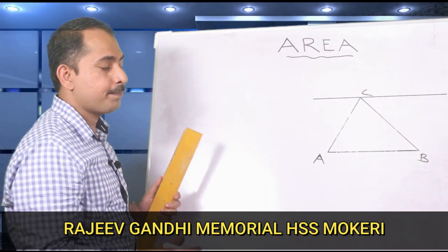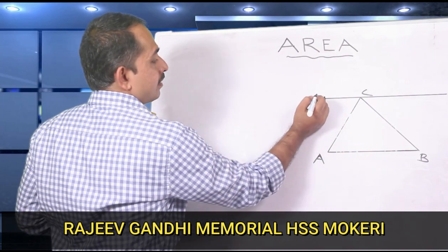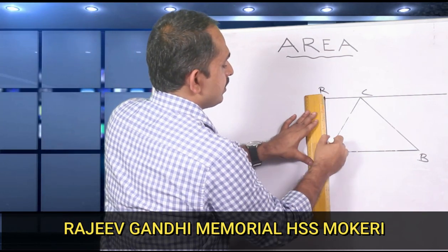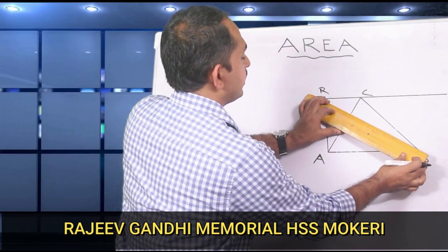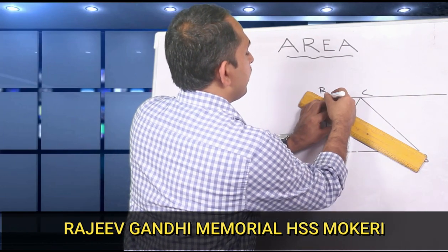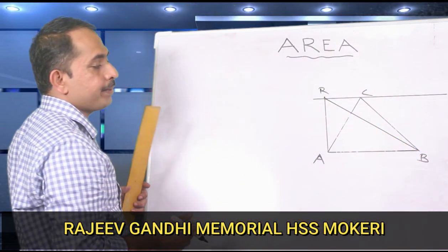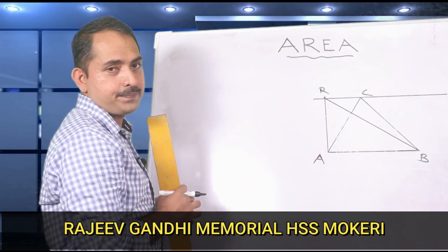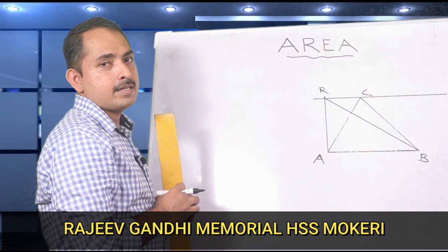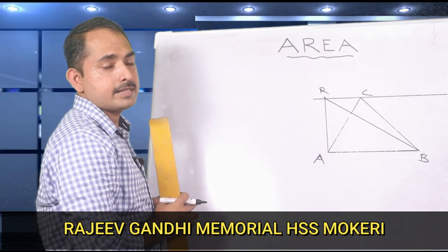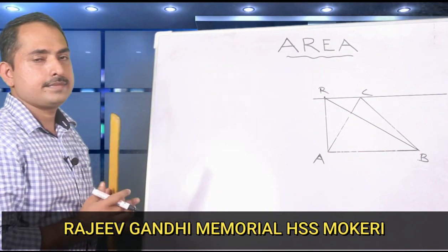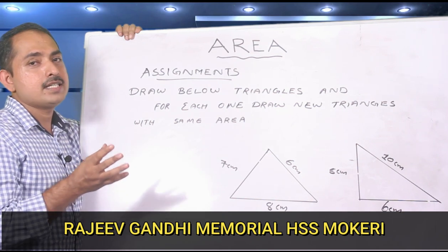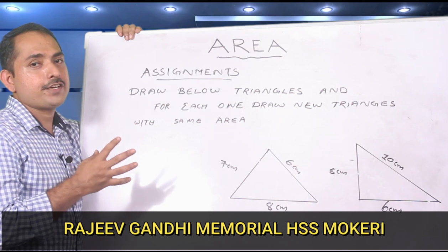Now it is easy to mark a point anywhere on this parallel line — say point R — and joining A to R and B to R. The new triangle ABR is formed. Its area is the same as that of triangle ABC, since its height is the same and the base AB is the same. So we have learned that for a given triangle, how to draw another triangle with the same area but a different shape.